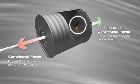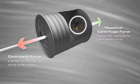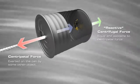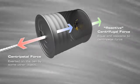If an object is placed inside the can, the object appears to have an outward force pushing it against the bottom of the can and away from the center of rotation.